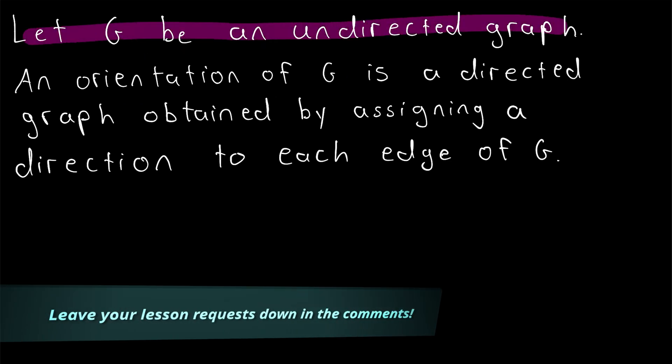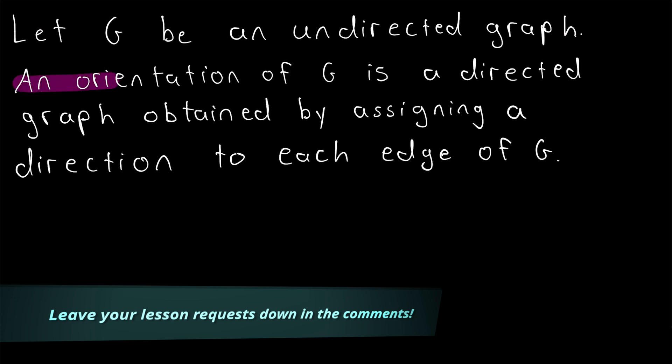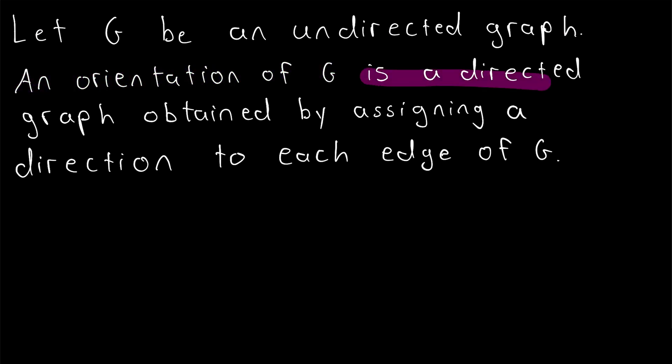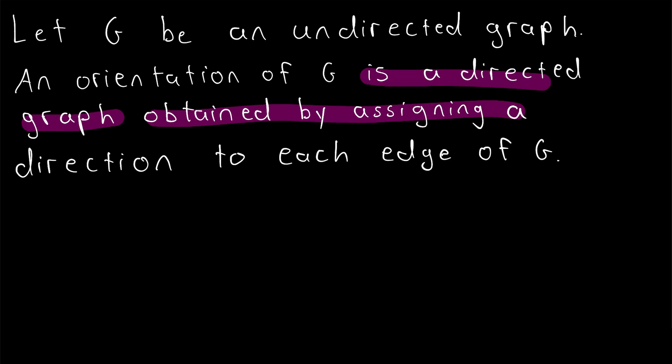Let G be an undirected graph. Then an orientation of G is a directed graph that's obtained by assigning a direction, or orienting, each edge of G.